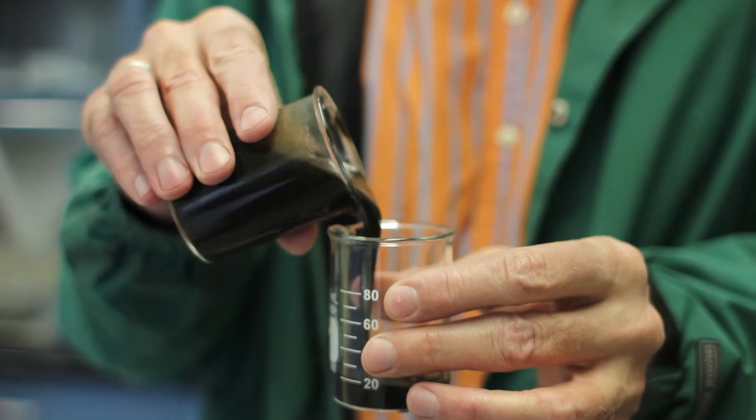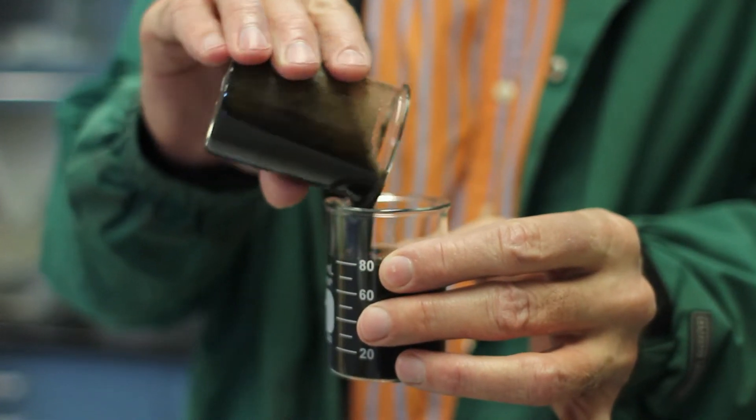Dale uses our bug juice when he feels it. He just adds it when he thinks he needs it. And this is what it does to the digester. See how thick that is coming out of there? The bug juice really thickens up the solids.